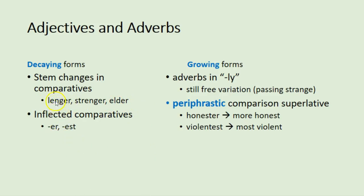We also get a decay in inflected comparatives such as bigger, biggest. These used to cover all our adjectives and adverbs — beautiful, beautifuler, or beautifulest, as they would have said in Middle English. And now we have far fewer of those.